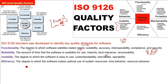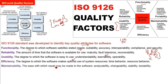Efficiency is the degree to which software makes optimal use of system resources. The software is going to work on a certain system, and the time complexity, space complexity, time behavior, and resource behavior are the factors defining efficiency. System resources have to be used very efficiently.